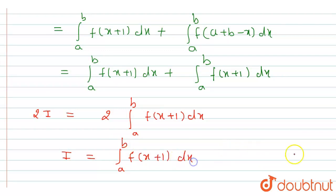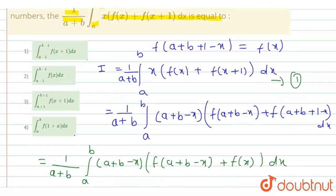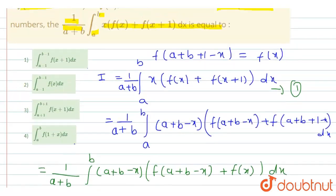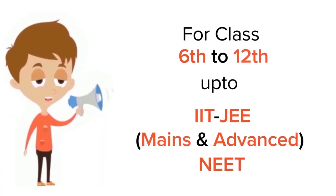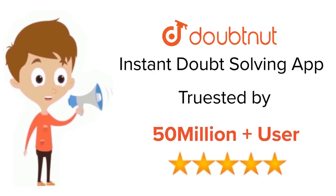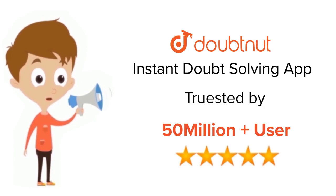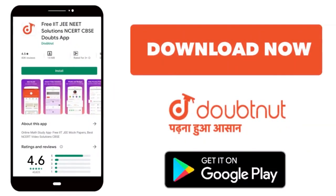So finally we obtain the value of the integration I, which equals option number four: ∫[a to b] f(1+x) dx. Option four is the correct answer. Thank you. For class 6 to 12, IIT JEE and NEET level — trusted by more than 5 crore students — download the Doubtnet app today.